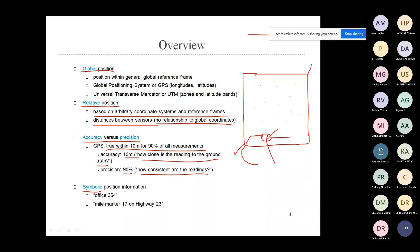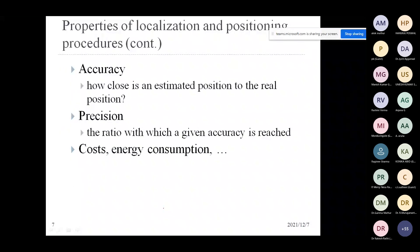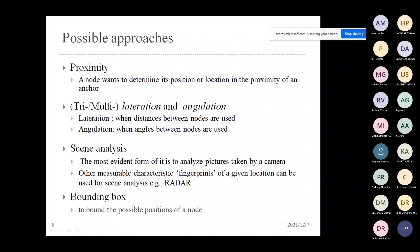Accuracy and precision are conflicting factors: GPS is accurate to within 10 meters for 90% of all measurements. Accuracy refers to how close a reading is to ground truth, while precision refers to how consistent readings are. Technologies must be evaluated on both dimensions, and symbolic position information such as 'office 354' or 'mile marker 17' also represents valid localization.